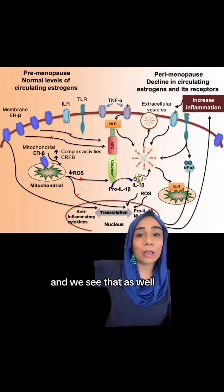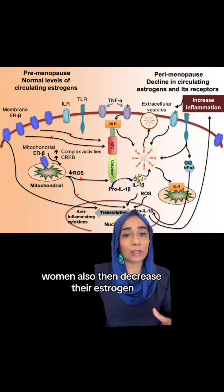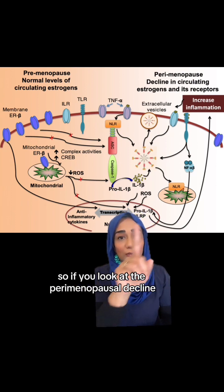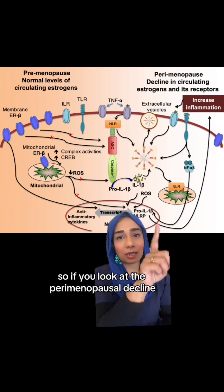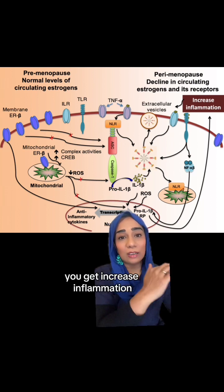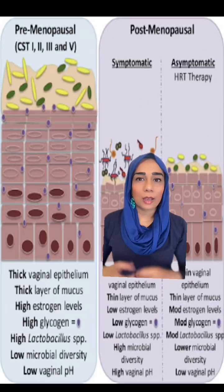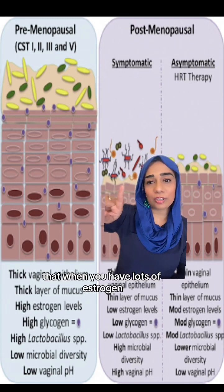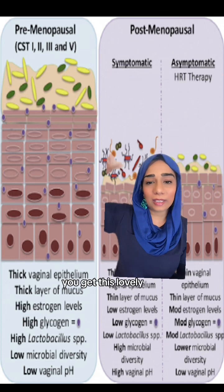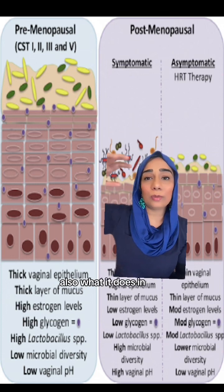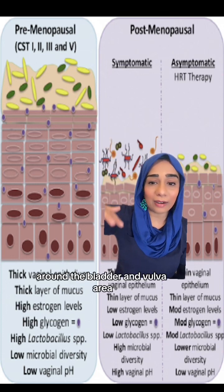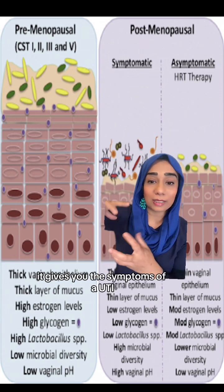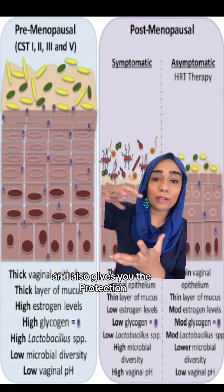If you have a look at this, we have lots of oestrogen floating around before menopause. When we're breastfeeding, women also decrease their oestrogen in order to breastfeed, so we see a decrease in oestrogen level. If you look at the perimenopausal decline in circulating oestrogen, you get increased inflammation. This picture shows that when you have lots of oestrogen, you get a thick epithelial layer — a lovely thick area of mucosa. It also allows a lower vaginal pH, because if you have a high pH, it gives you the symptoms of a UTI and reduces your protection.